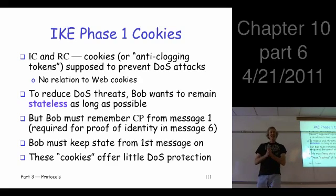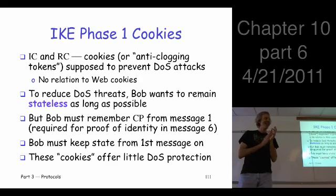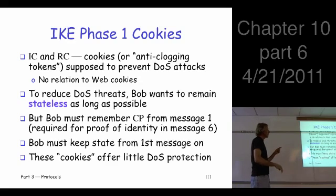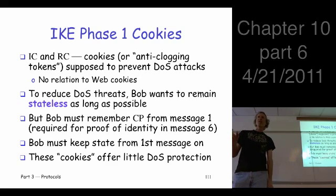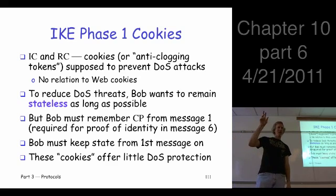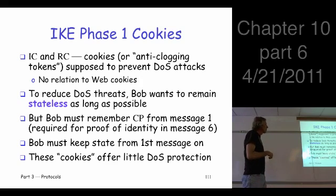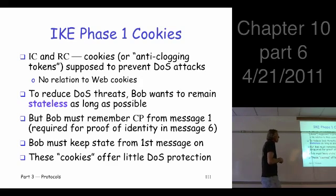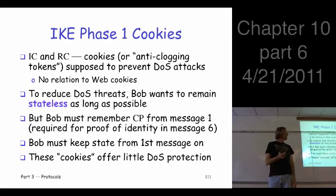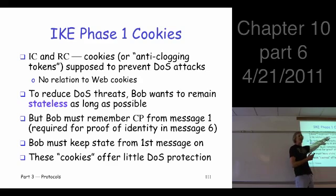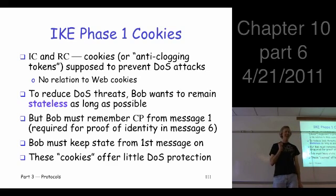So, just about the end of phase one. We mentioned IC and RC — the initiator cookie and responder cookie. Just think of this as an identifier for this particular connection between Alice and Bob. If you read the RFCs, they have a really great name for these — they call these anti-clogging tokens.